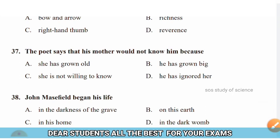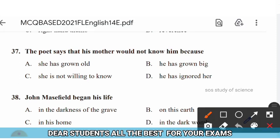Question 37: The poet says that his mother would not know him because — options: (A) she has grown old, (B) he has grown big, (C) she is not willing to know, (D) he has ignored her. The right answer is option B — he has grown big.